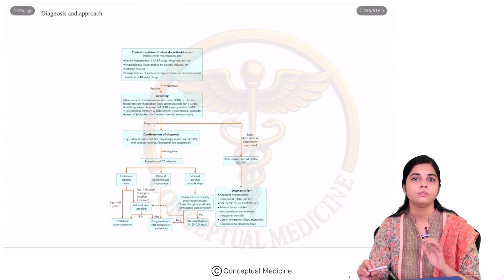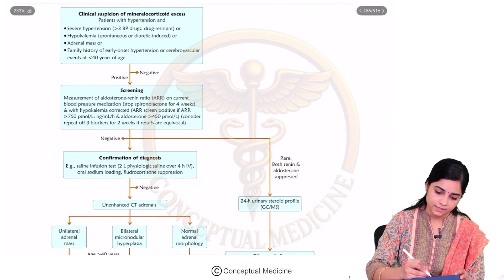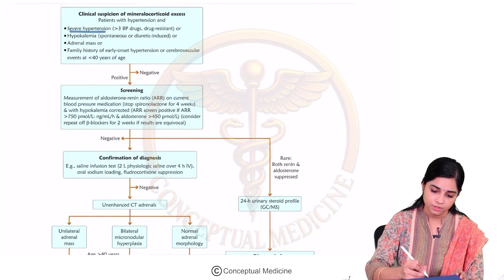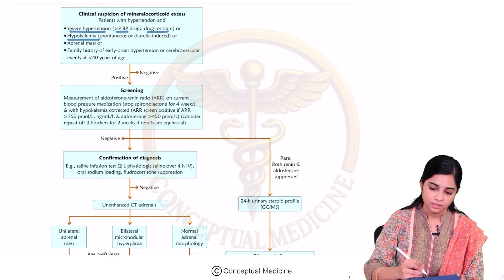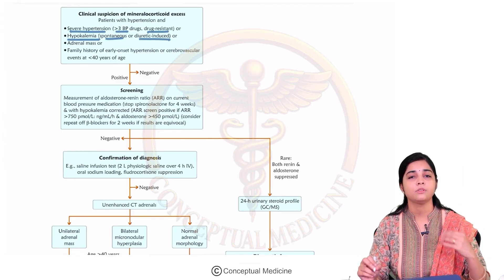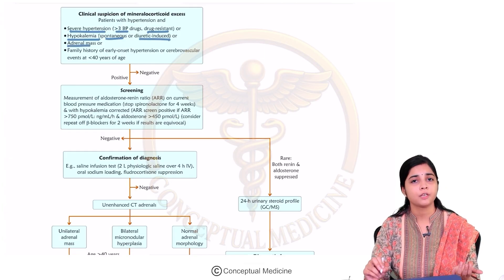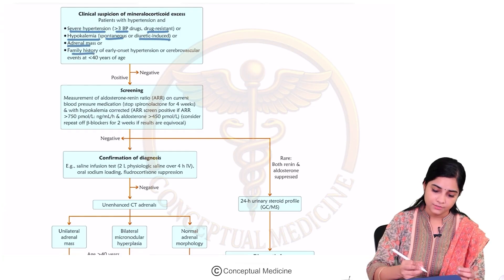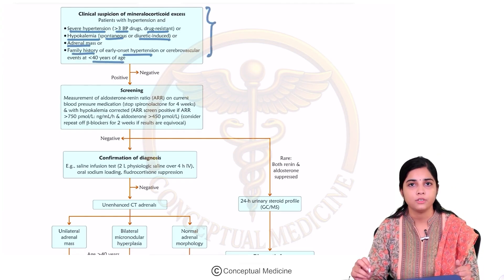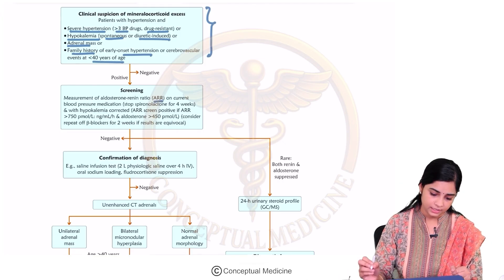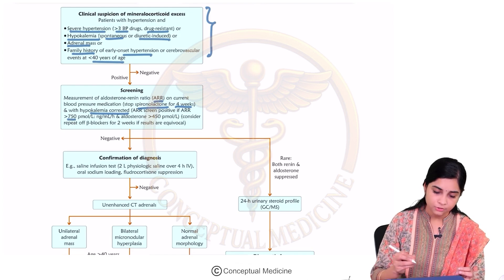Now let us look at the diagnostic approach for a patient suspected to have mineralocorticoid excess. Clinical suspicion arises in: severe hypertension on more than 3 groups of drugs or drug-resistant hypertension; hypokalemia, either spontaneous or diuretic-induced; presence of an adrenal mass found incidentally; and family history of early onset hypertension less than 40 years of age. Then you do your screening test — the ARR. Stop spironolactone for 4 weeks, correct hypokalemia, and do the ARR. If ARR is positive at a value more than 750 picomoles per litre, proceed.